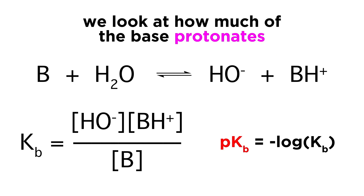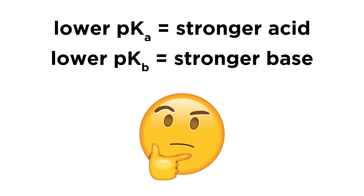When looking at a base, we can do the same thing with pKb values. These are just the negative log of Kb values, which are base dissociation constants. These quantify the basicity of a molecule just like Ka quantifies acidity. So if we remember just one thing, it should be that a lower pKa means a stronger acid and a lower pKb means a stronger base, and later we will talk about how to tell which acids and bases are stronger based on their structures.